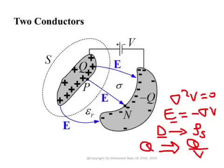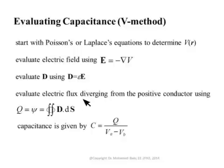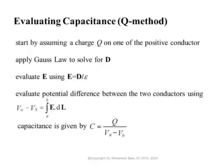To summarize the V method: it is a general procedure. Start by solving Laplace's or Poisson's equation to get the potential V at any point. Apply E equal to minus the gradient of V to get the electric field. Apply D equal to epsilon times E to get the electric flux density. Then calculate the total charge either from boundary conditions — getting surface charge density and integrating — or by applying Gauss's law around the positive conductor.